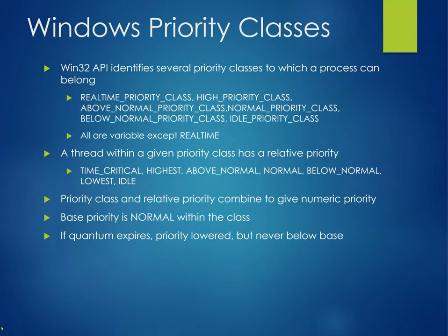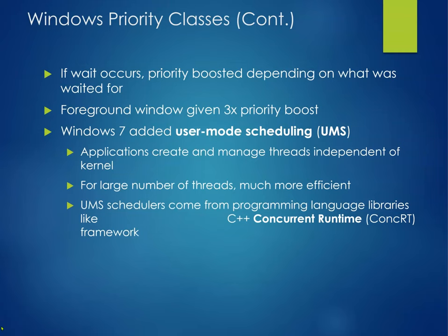All priority classes except real time are variable. A thread within a given priority class has a relative priority — time critical, highest, above normal, normal, etc. Priority class and relative priority combine to give a numeric priority. The base priority is normal within the class. If the quantum expires, priority is lowered but never below the base. If a wait occurs, the priority is boosted depending on what was waited for. Foreground windows get a three-times boost to keep things responsive. Windows 7 added user-mode scheduling, allowing applications to create and manage threads independently of the kernel — much more efficient for large numbers of threads, coming from programming language libraries like C++ Runtime or the .NET framework.